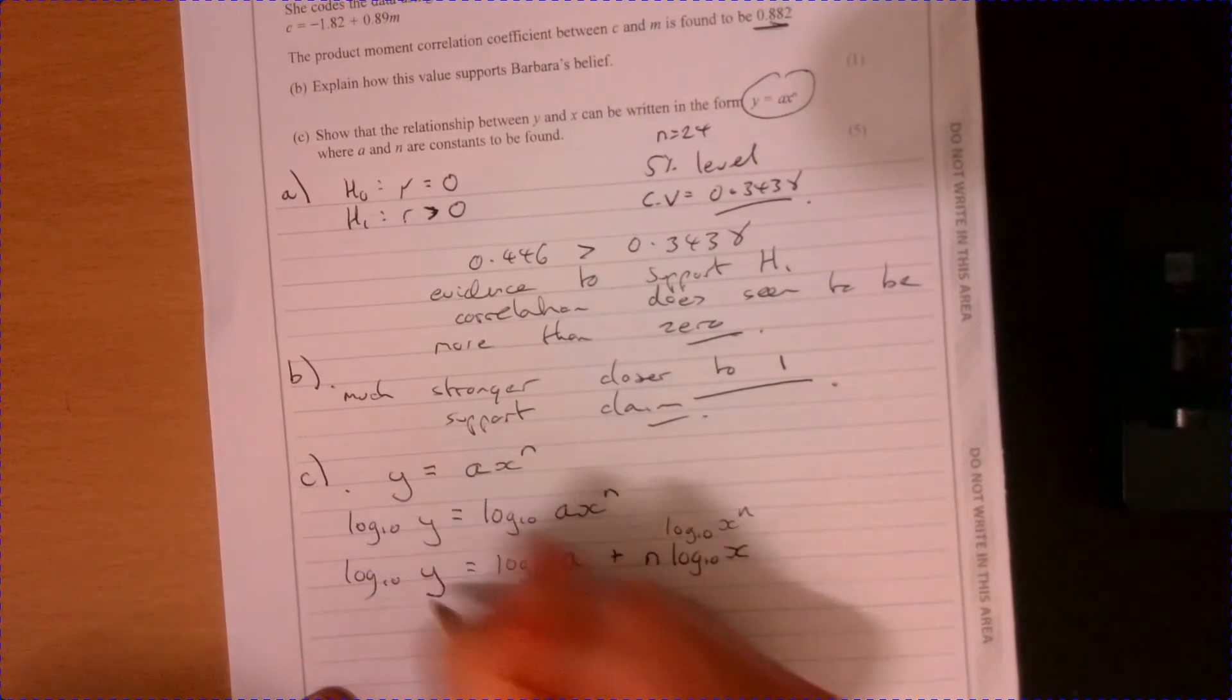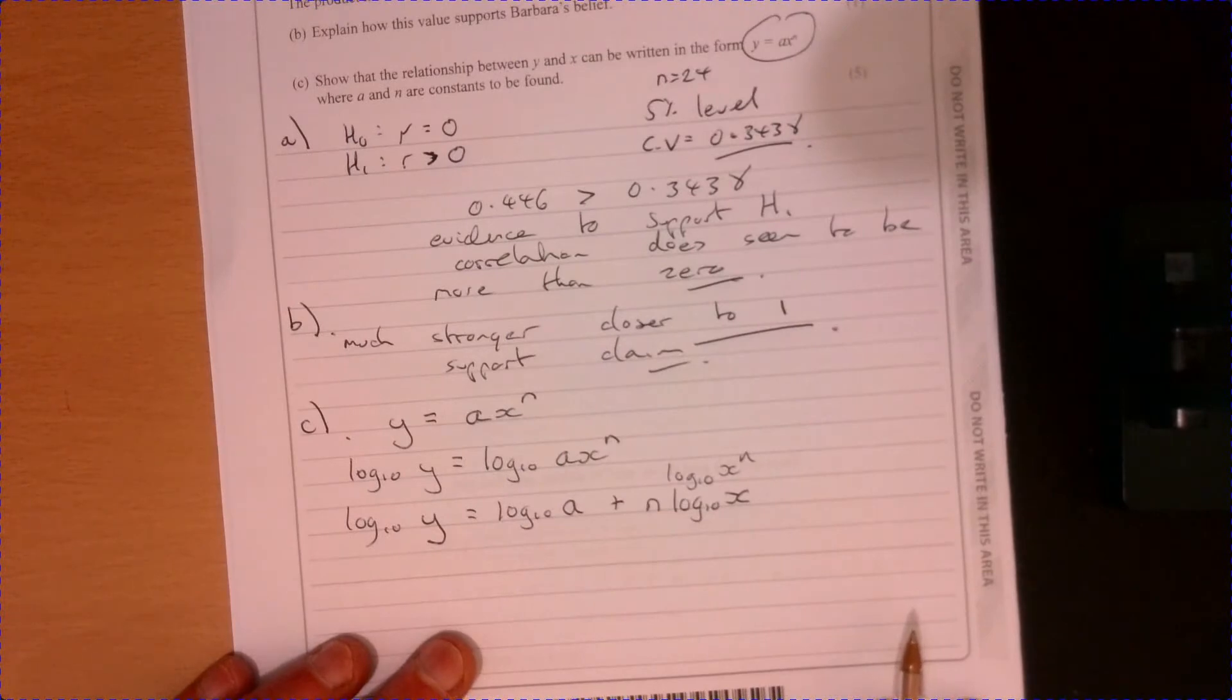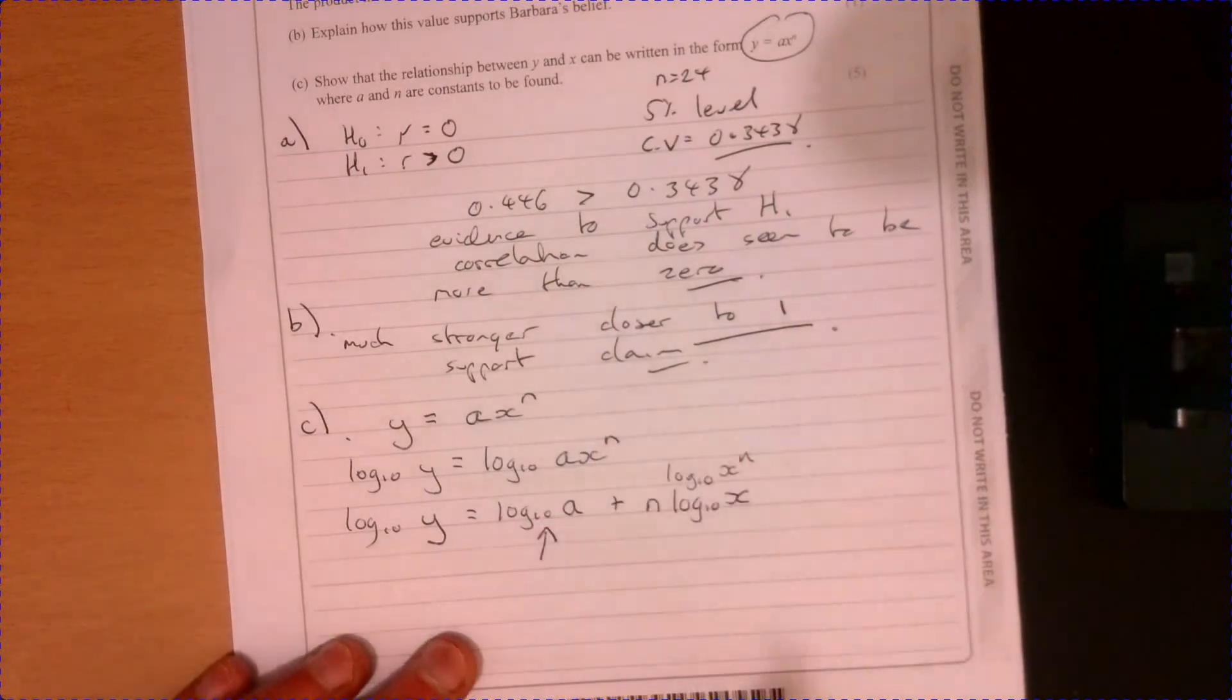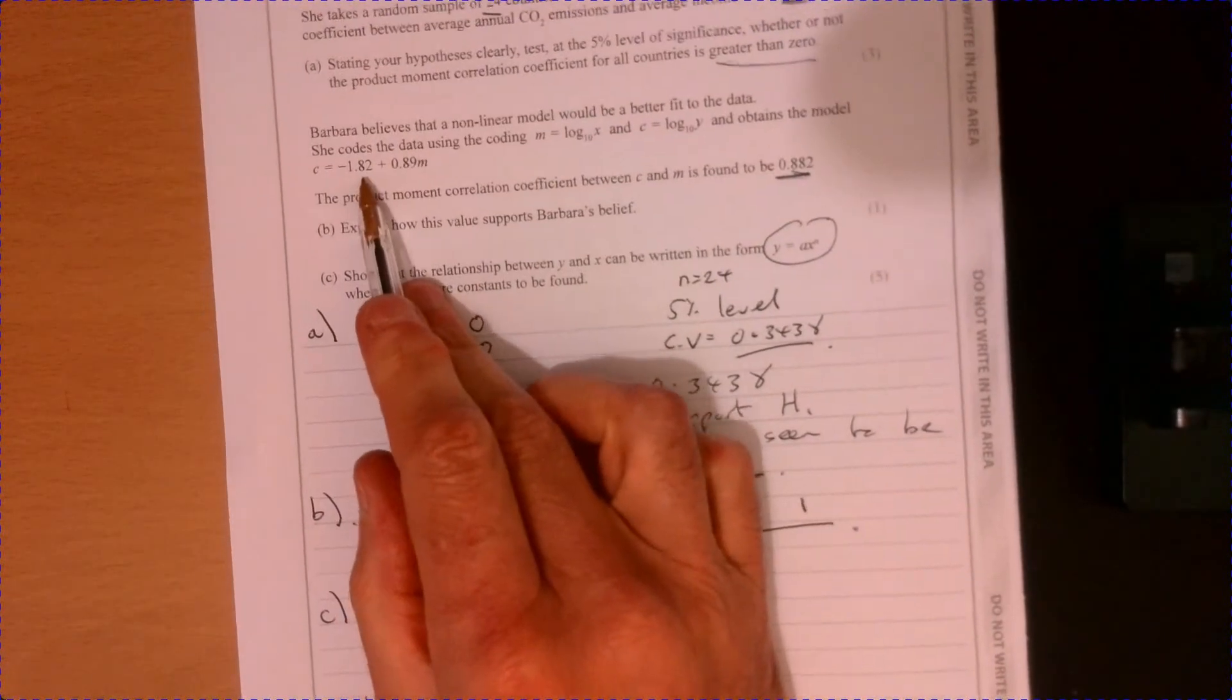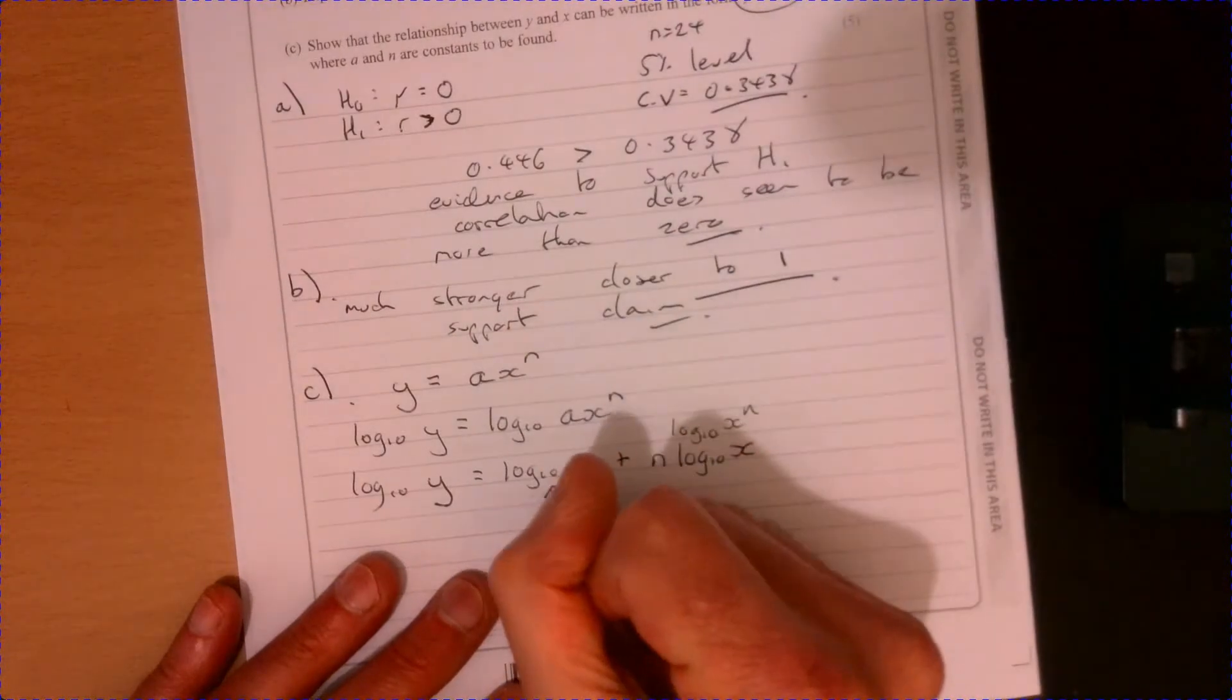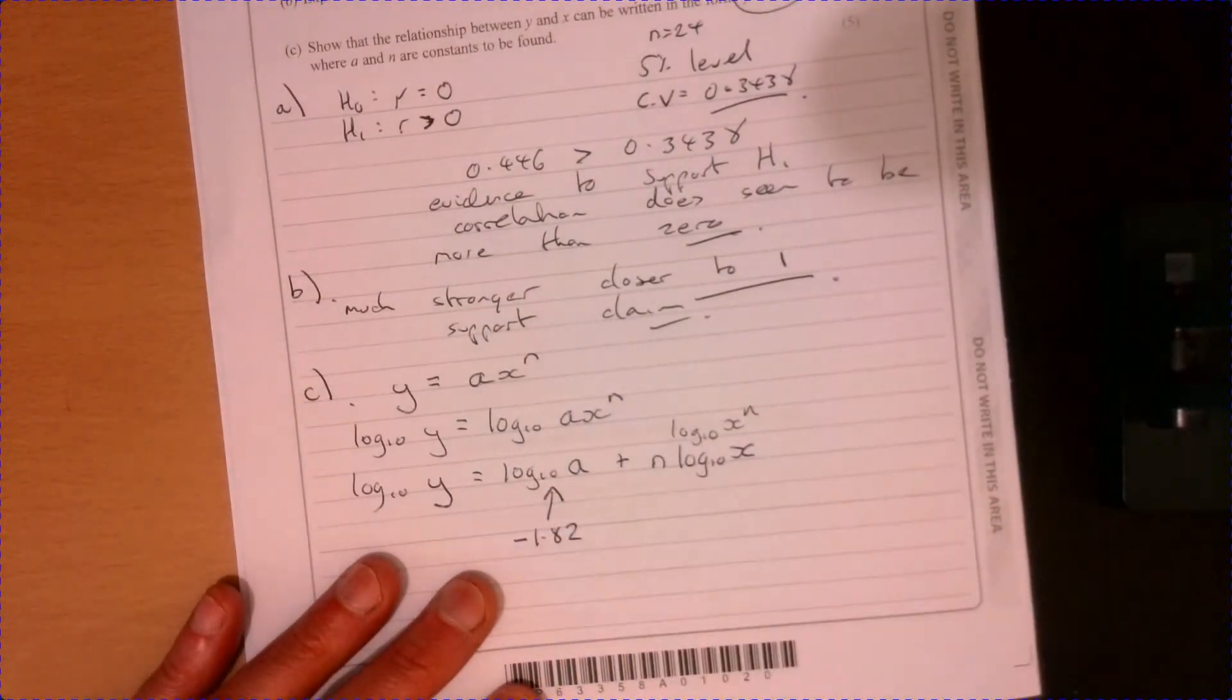Now, let's just go back and actually think about what these things actually are. So this point here, log 10 A. So let's go back up to what we are actually told. Well, that's this bit.